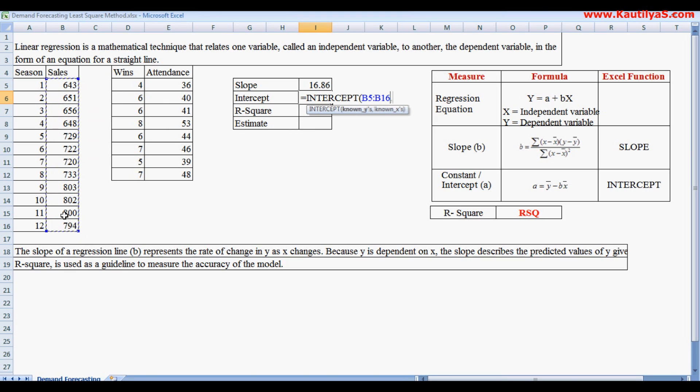R-square explains the strength of the association between the independent variable and dependent variable. It can also be said that what percentage of influence X has on Y.